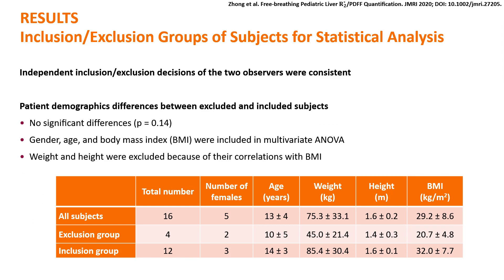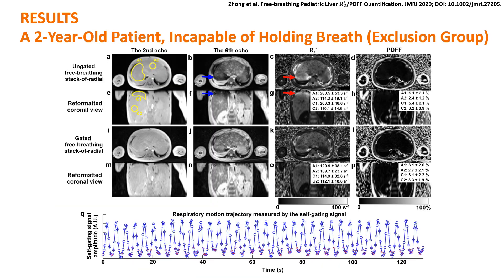For in vivo subjects, two observers made independent and consistent inclusion-exclusion decisions. The demographics of all subjects and the two groups are listed in the table; multivariate ANOVA with gender, age, and BMI showed no significant differences between groups. Example images and maps for a 2-year-old patient in the exclusion group are shown here. The pixel intensities on the 6th echo images of the ungated results showed strong signal attenuation near the liver dome, leading to an apparent elevation of R2-star values. This was corrected in the gated results, while no similar artifact was observed in the PDFF maps.